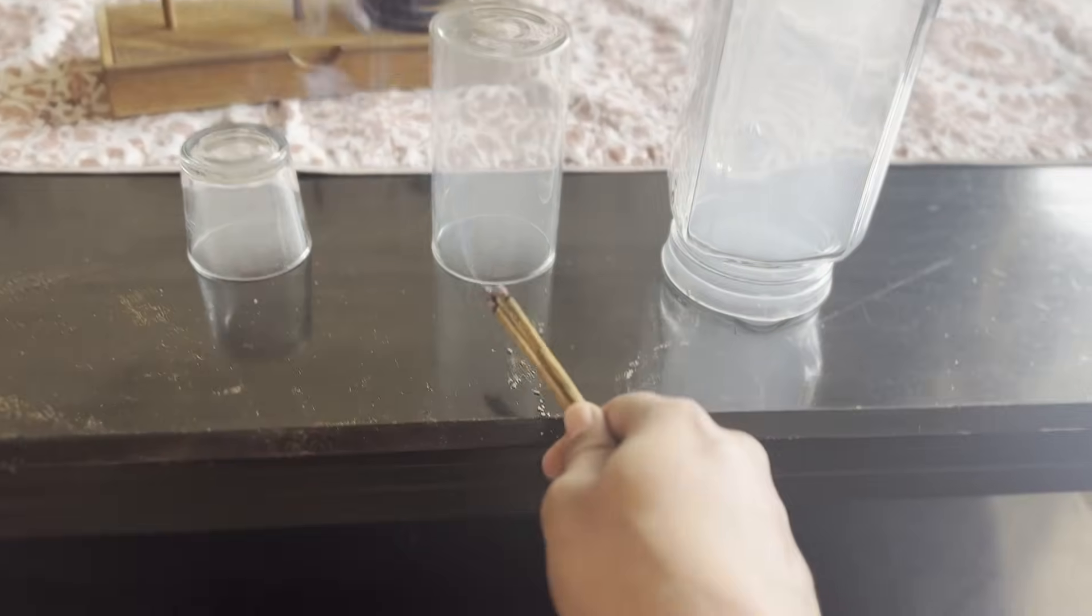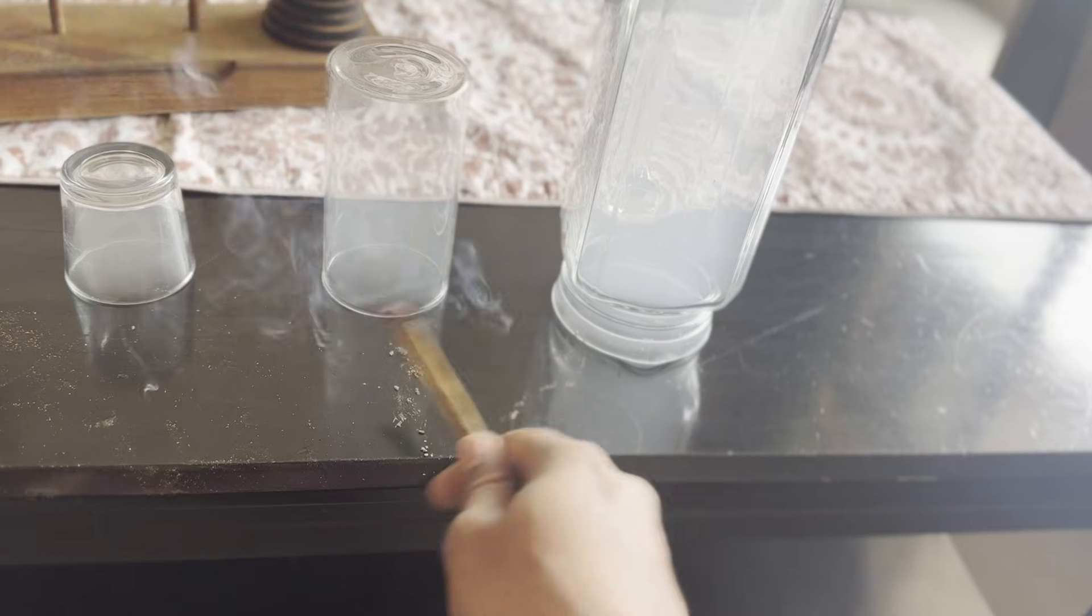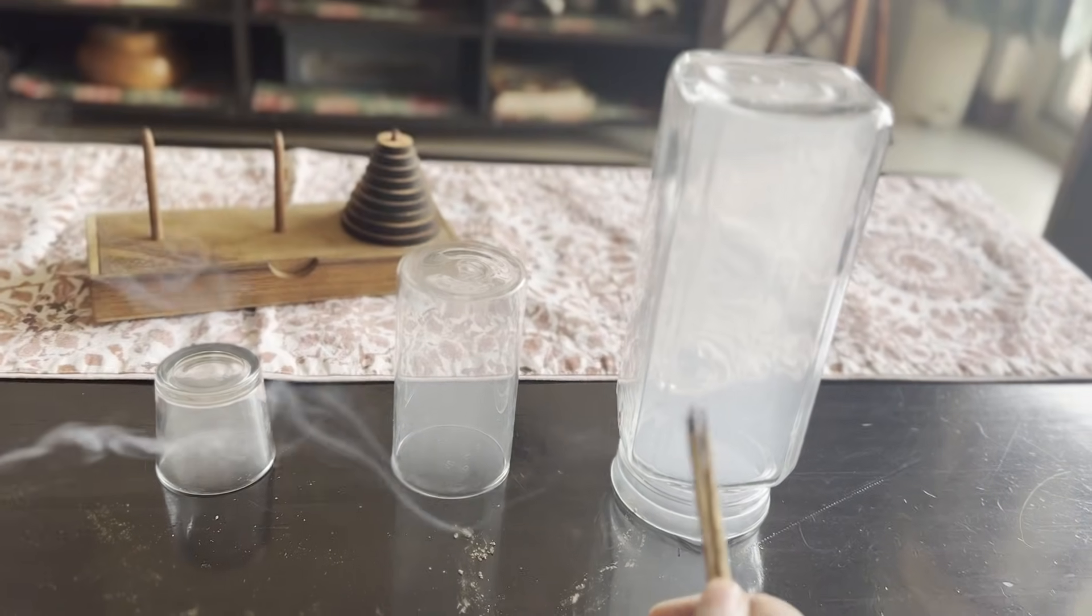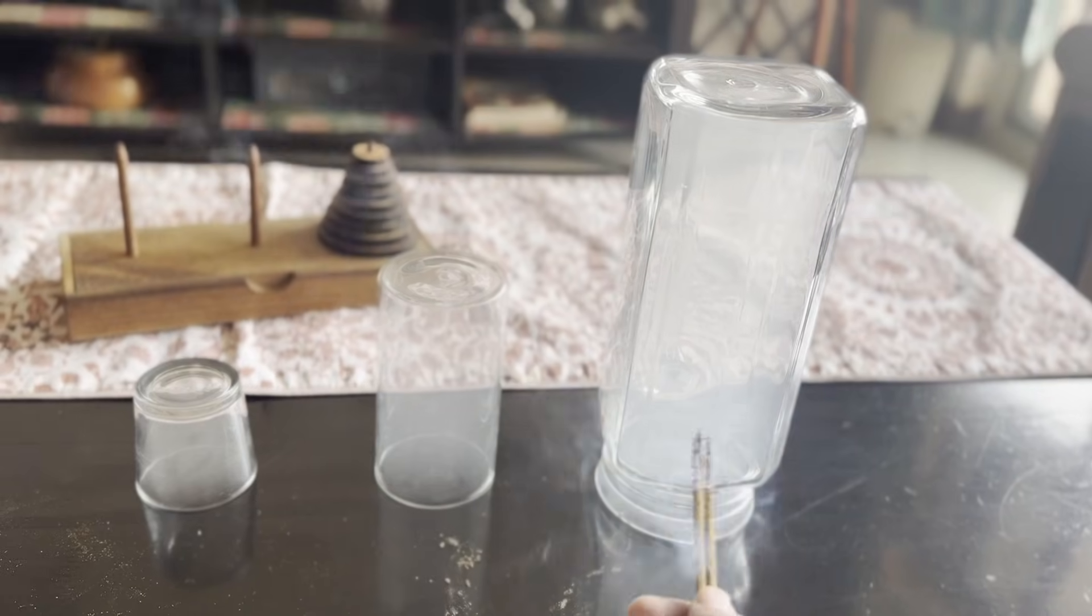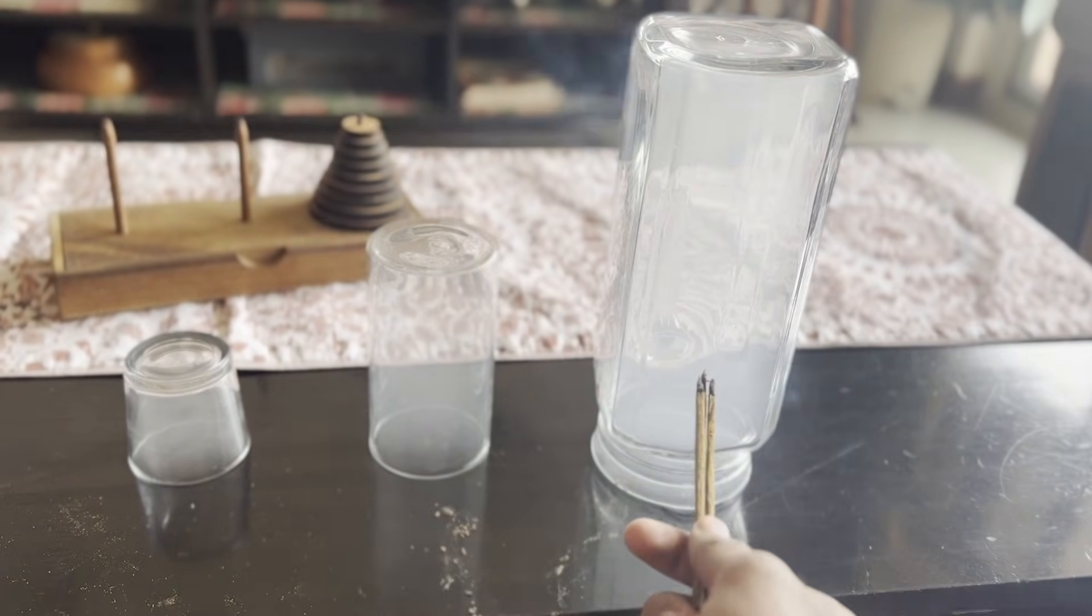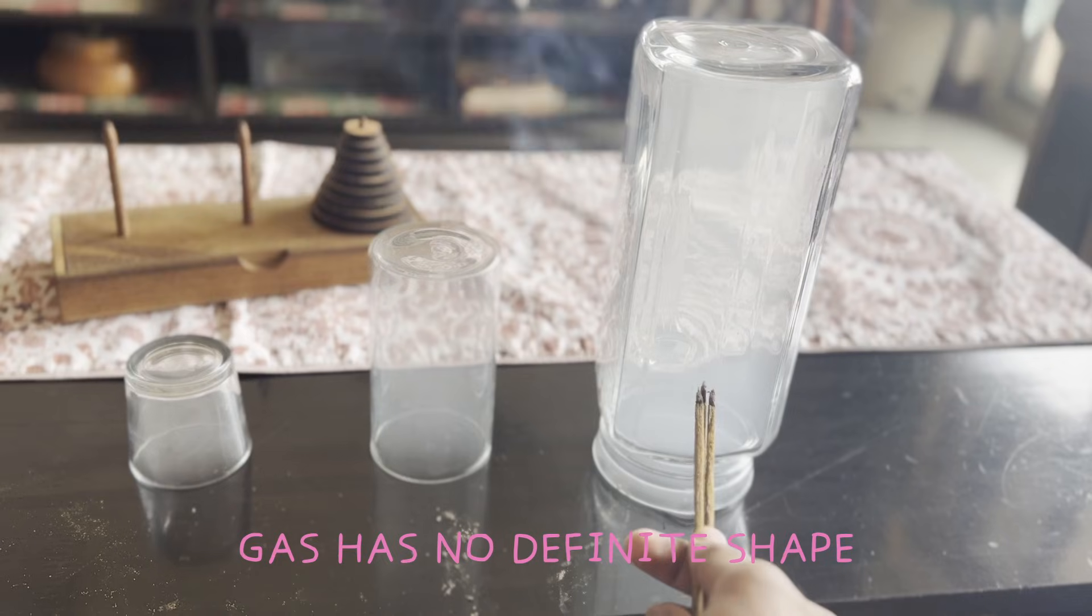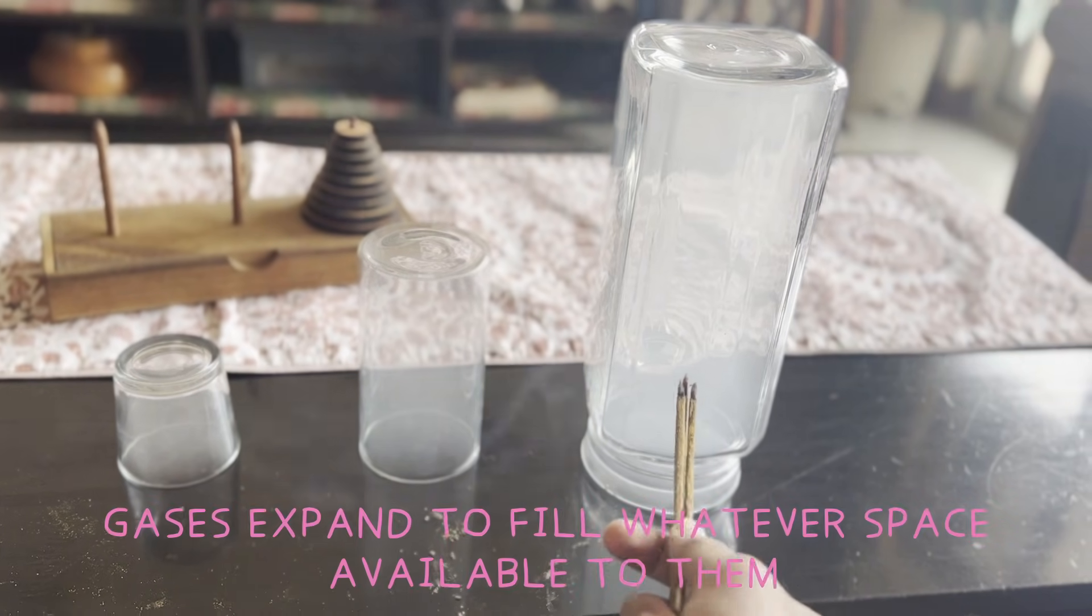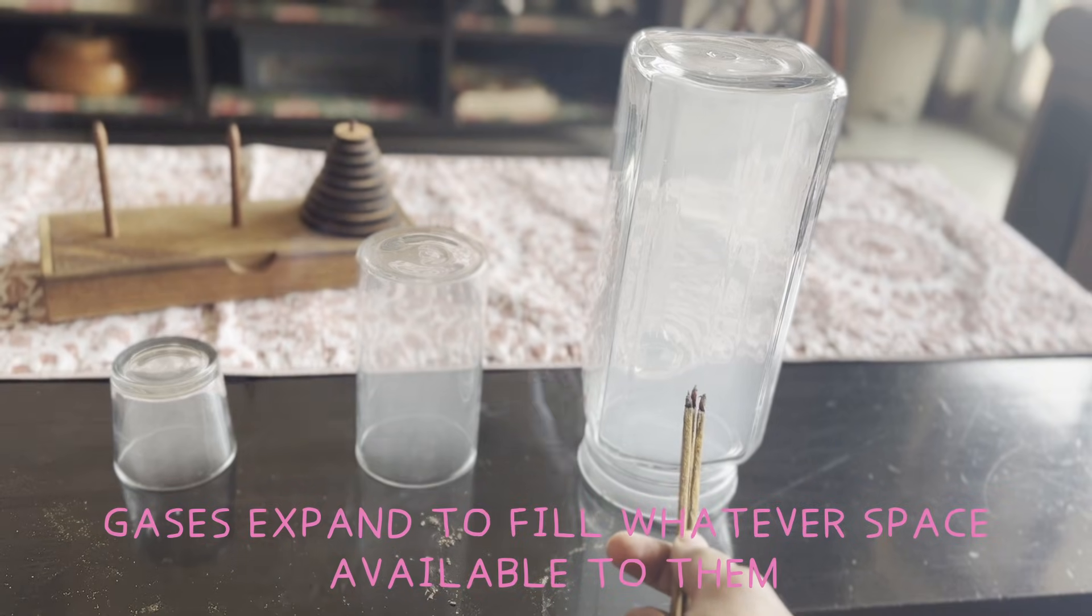What is happening here? The gas is taking the shape of the container. The first one, small glass. Second one, a cylindrical glass. Third one, a bigger jar. What's the key takeaway from here? It's very evident. We are watching it with our eyes that gases have no definite shape. They just expand to fill whatever space they get.